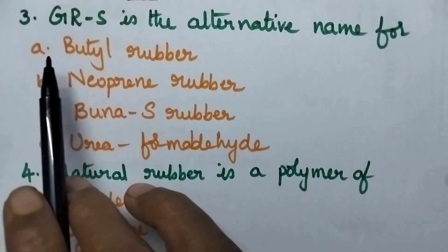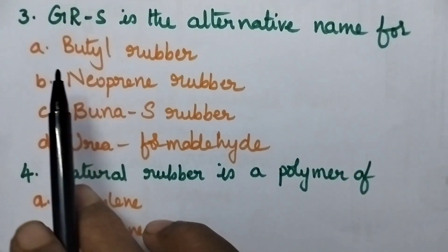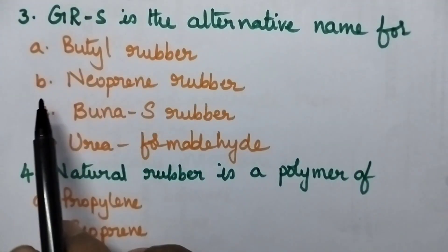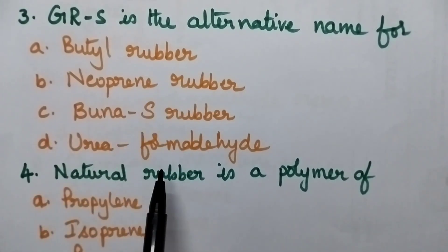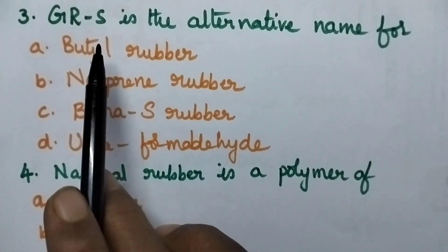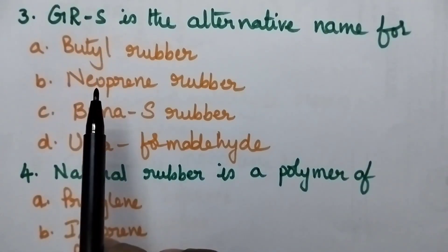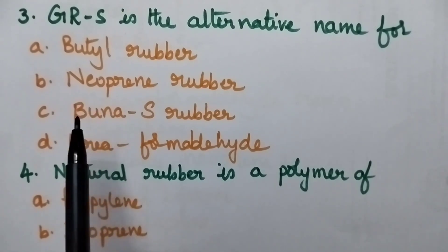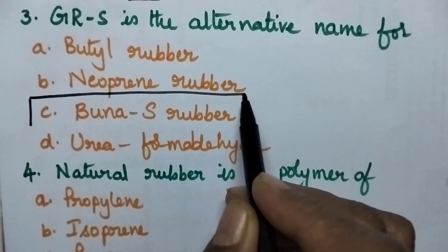Third question. GRS is the alternative name for A. Butyl rubber, B. Neoprene rubber, C. Buna-S rubber, D. Urea formaldehyde. GRS means government rubber of styrene. So here styrene is one of the monomer. So option C. Buna-S rubber is the right answer.